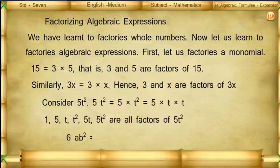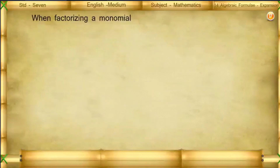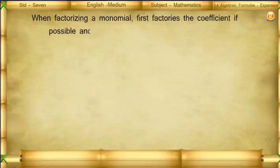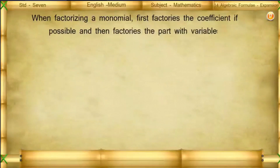6ab² = 2 × 3 × a × b × b. When factorizing a monomial, first factorize the coefficient if possible, and then factorize the part with variables.